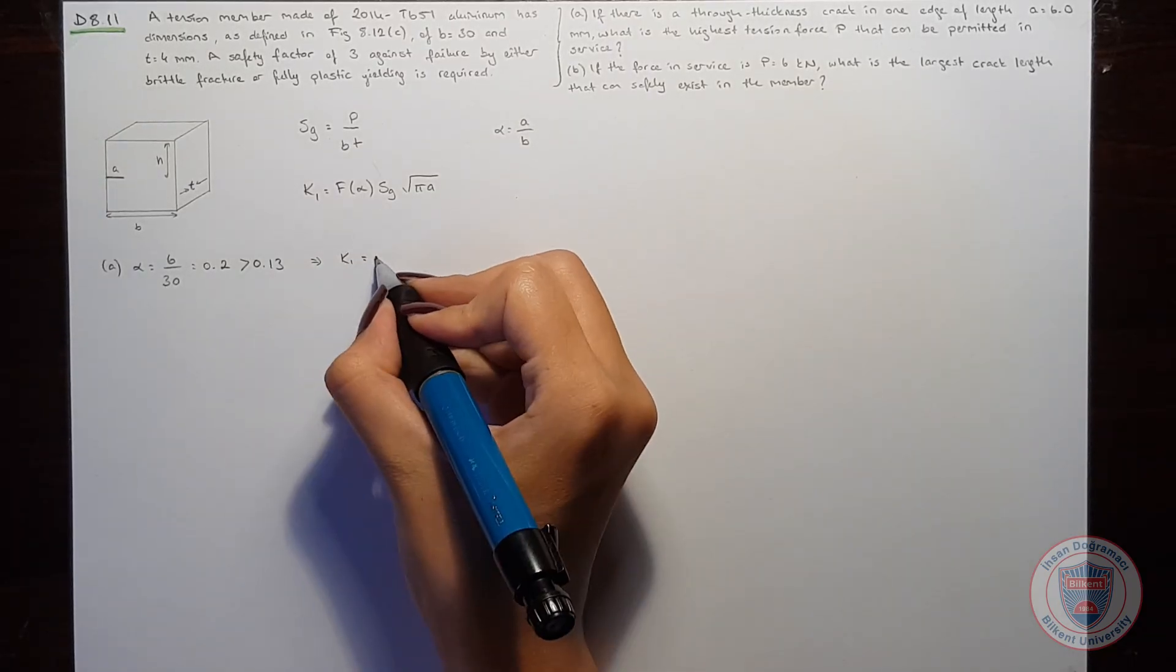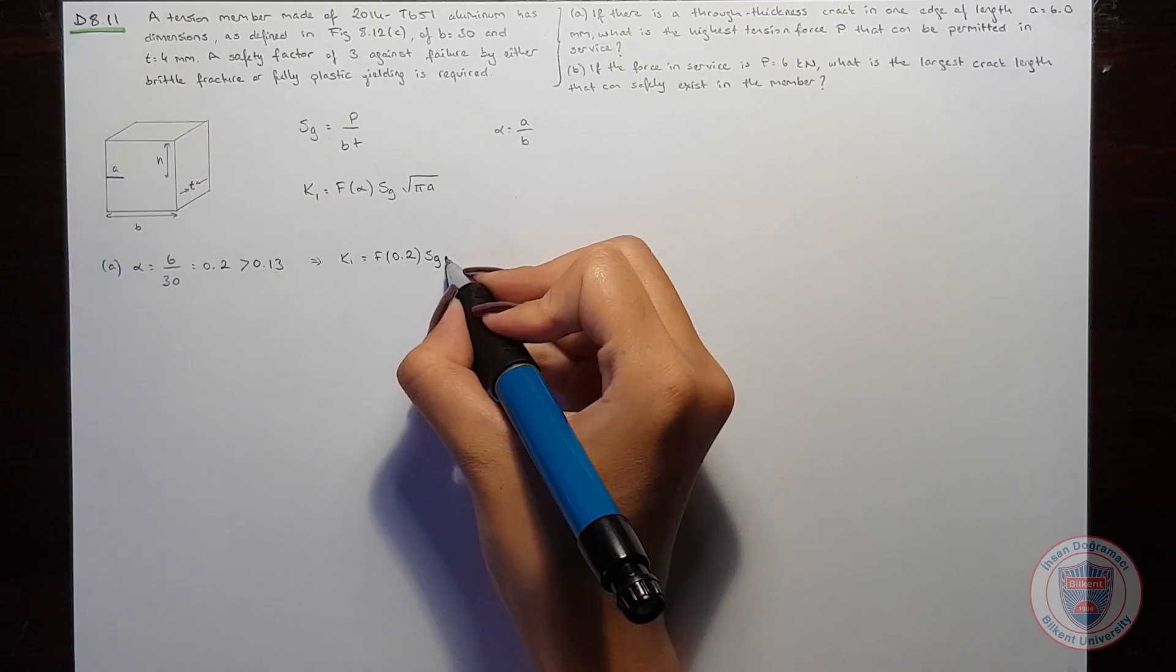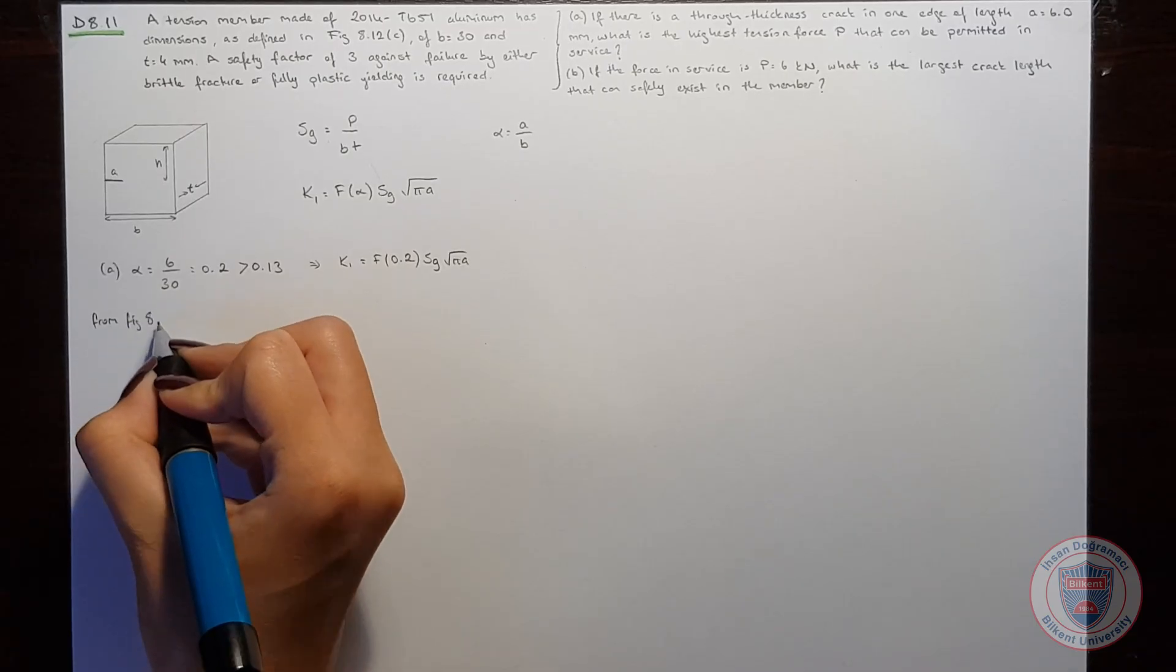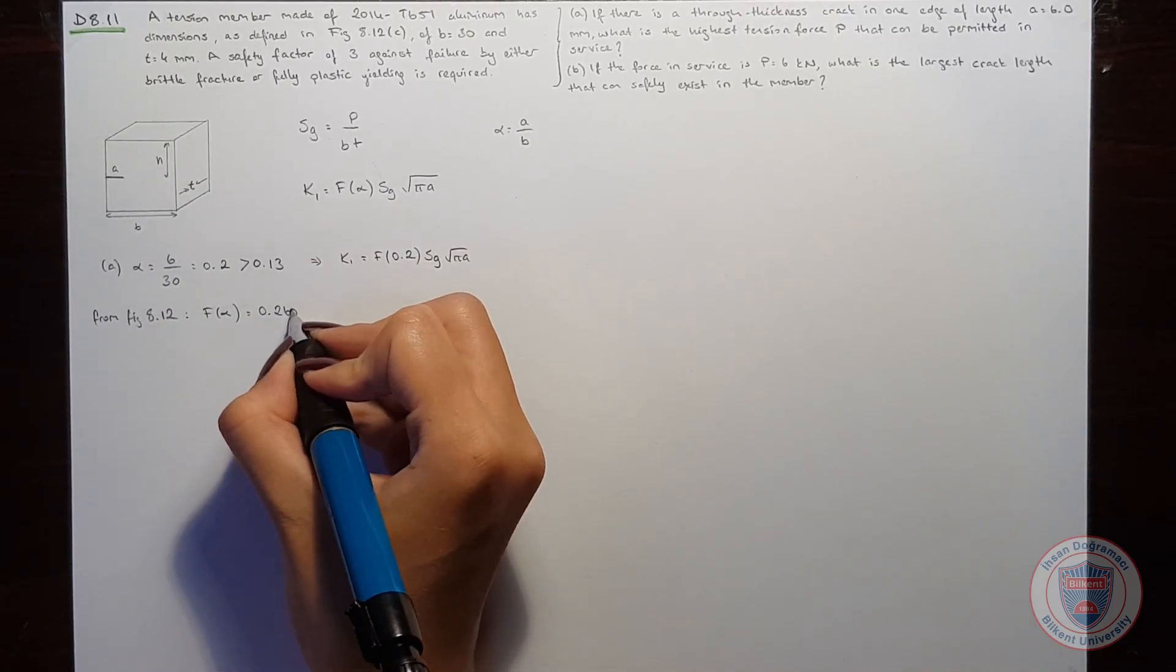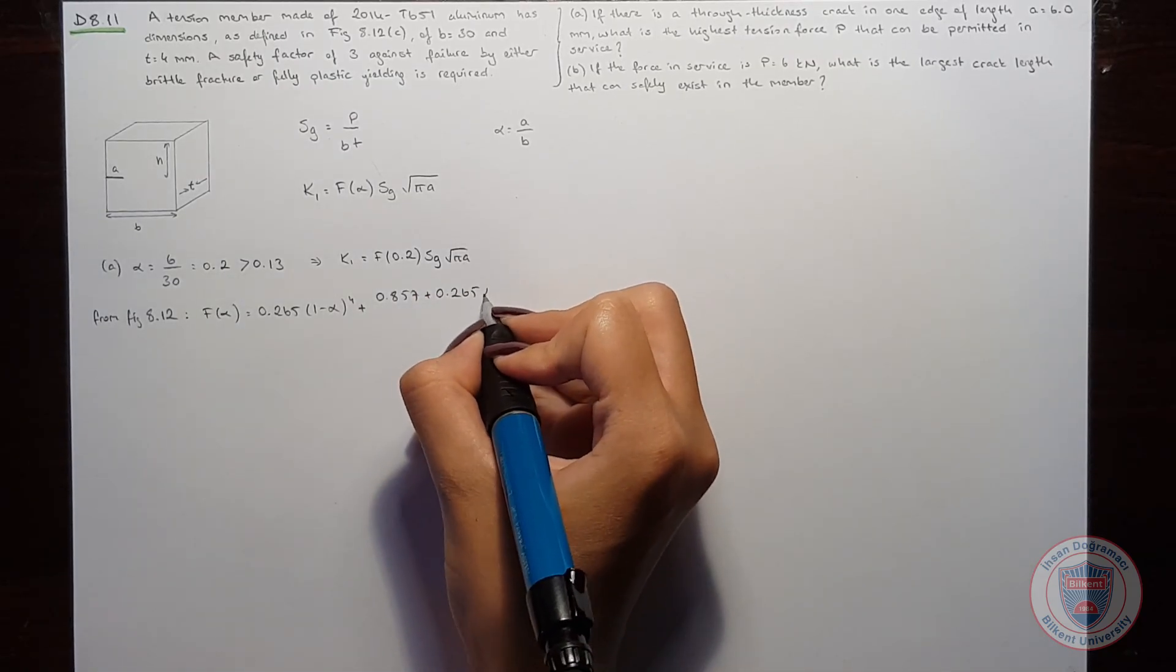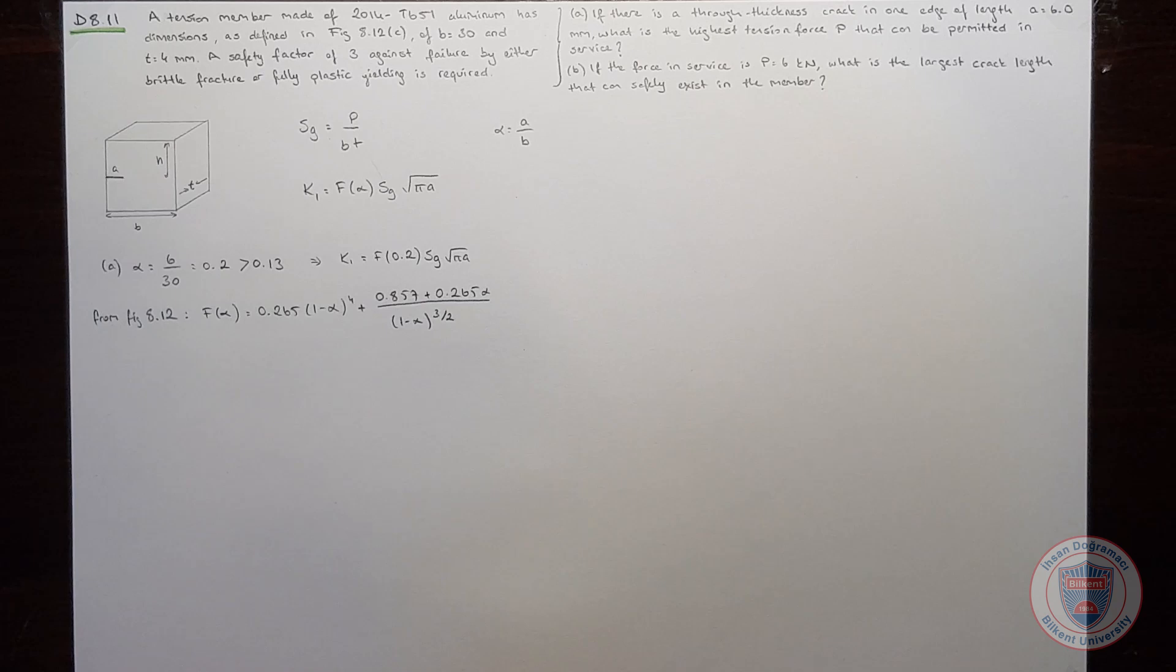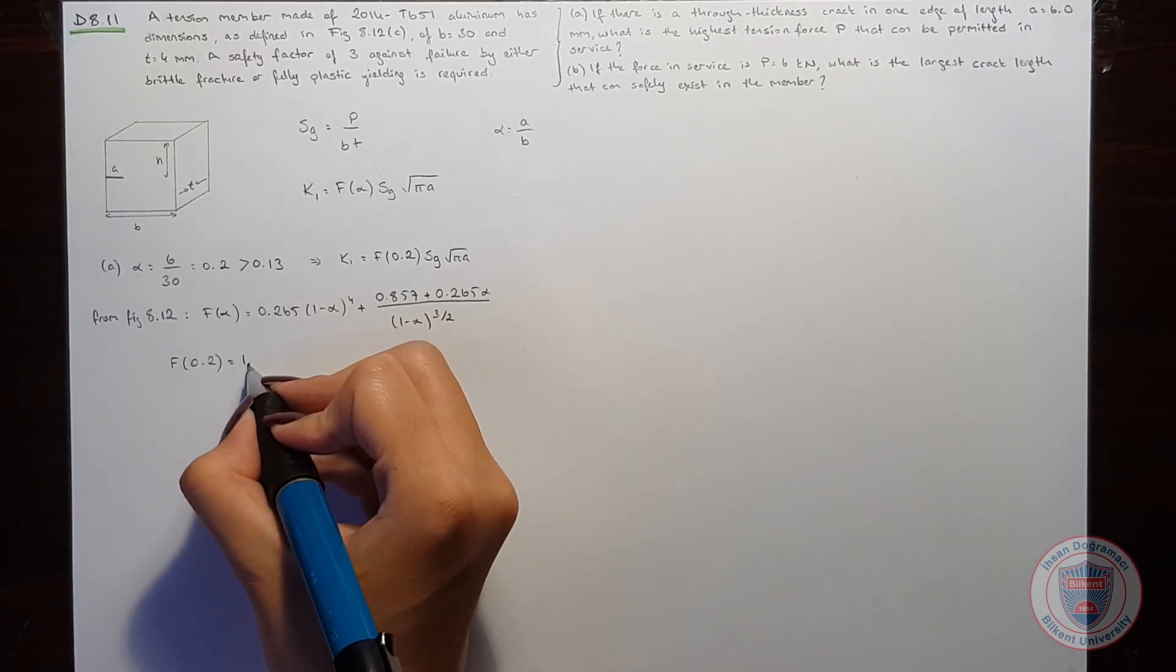And our stress intensity factor will be equal to form factor at 0.2 times S_g times pi*a. From figure 8.12, we have the equation for form factor. When we compute this equation for alpha equal to 0.2, we get the form factor as 1.38.